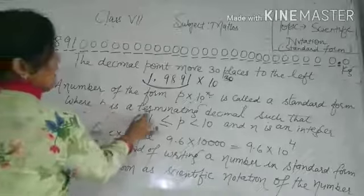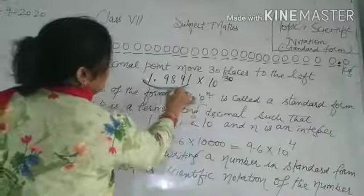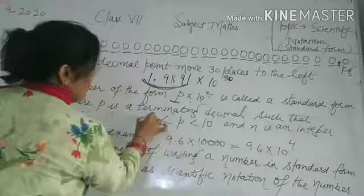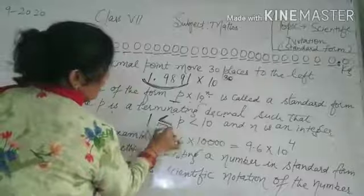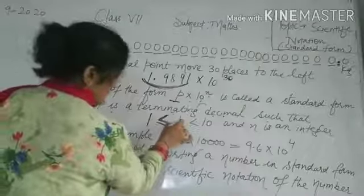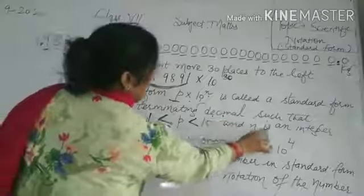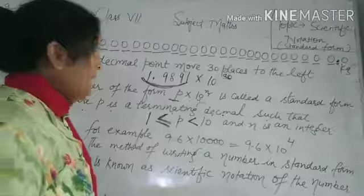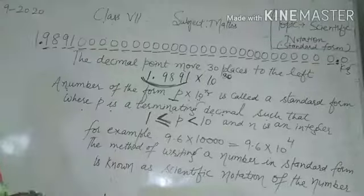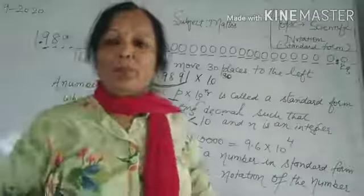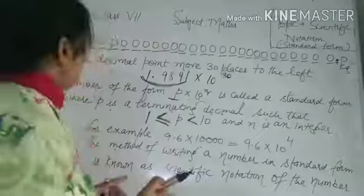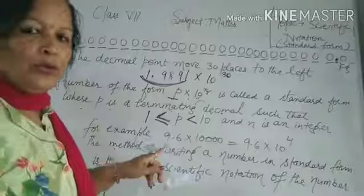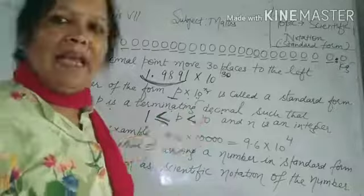A number of the form p × 10^n is called standard form, where p is a terminating decimal such that 1 ≤ p < 10, and n is an integer.